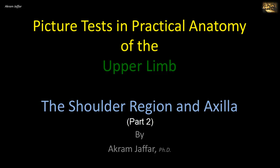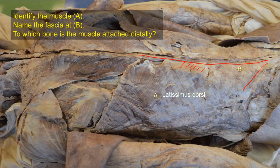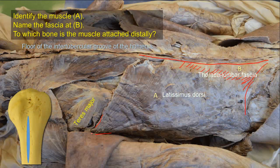Now I will deal with the shoulder region and axilla. Identify the muscle A and the fascia at B — to which bone is the muscle attached distally? This is latissimus dorsi muscle, the wide flat muscle of the back. Latissimus means wide. It arises from the lower six thoracic spines and from the lumbar spines as well. The origin from the lumbar spines is by means of the thoracolumbar fascia, and the origin then continues on the iliac crest of the hip bone. The wide fibers of the muscle converge to form a tendon that wraps around the lower border of teres major muscle to be inserted into the floor of the intertubercular groove of the humerus — this is the distal attachment of the muscle.